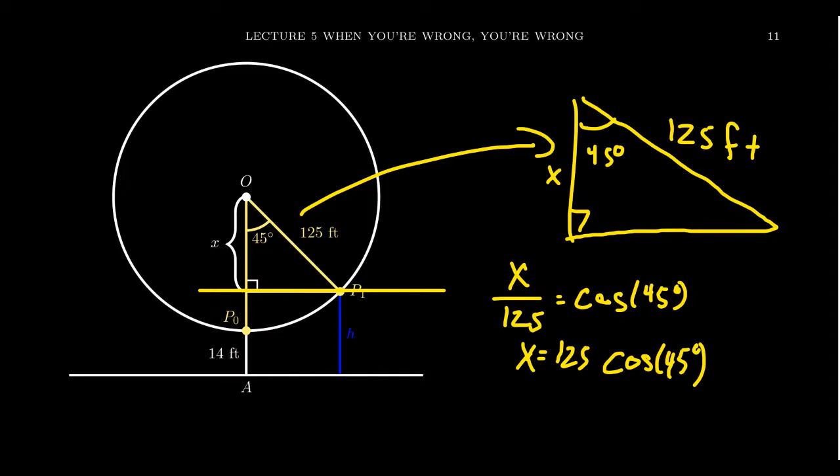Why does that matter? The reason we care about X is because if we calculate the distance from the center of the Ferris wheel to the ground, we know that distance. This distance is 14, and this distance is 125. So the total distance above the ground to get to the center of the Ferris wheel is going to be 14 plus 125.